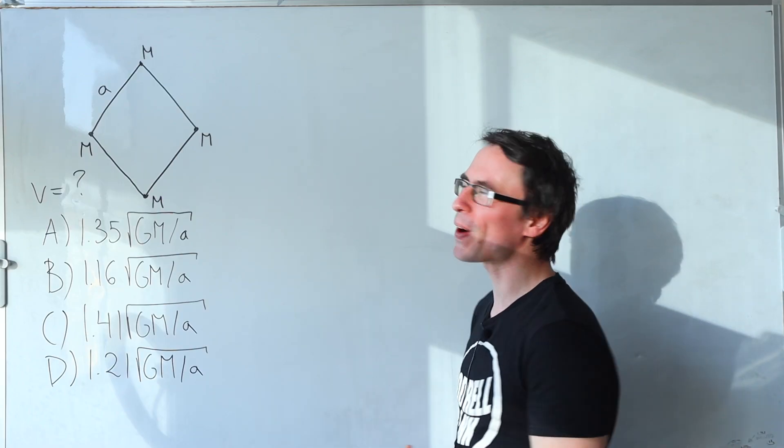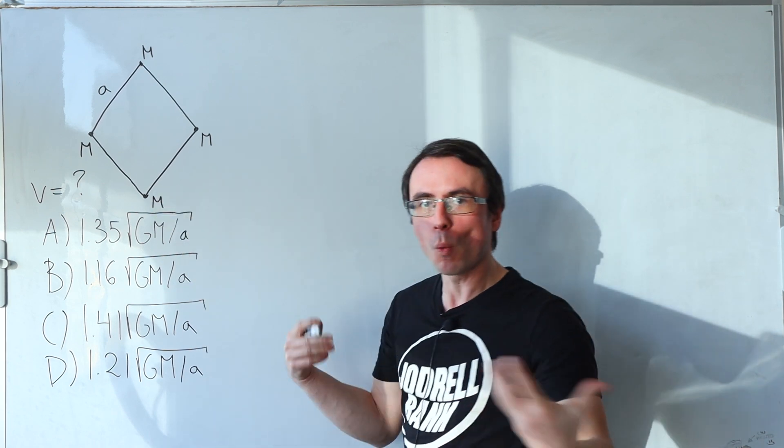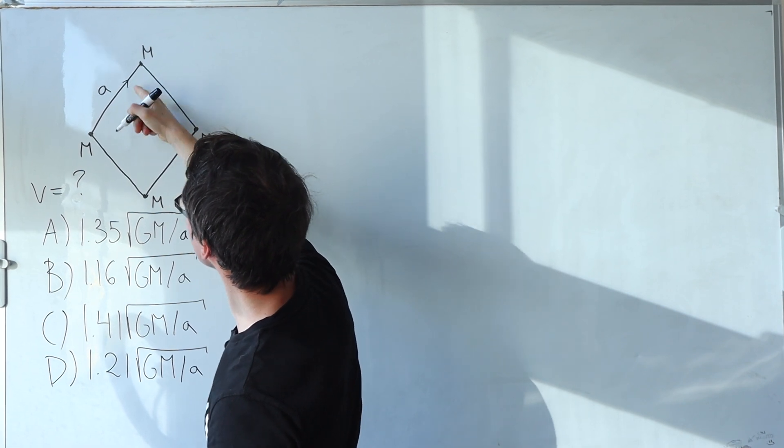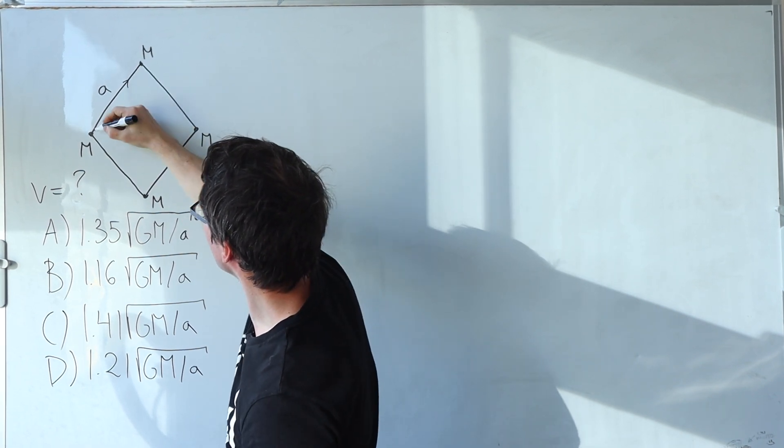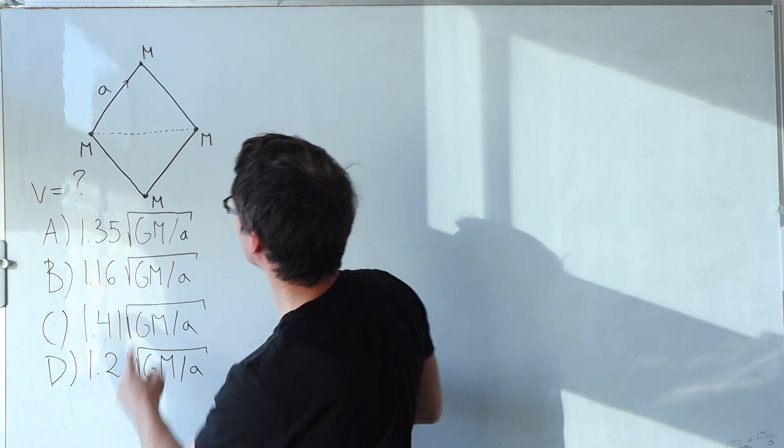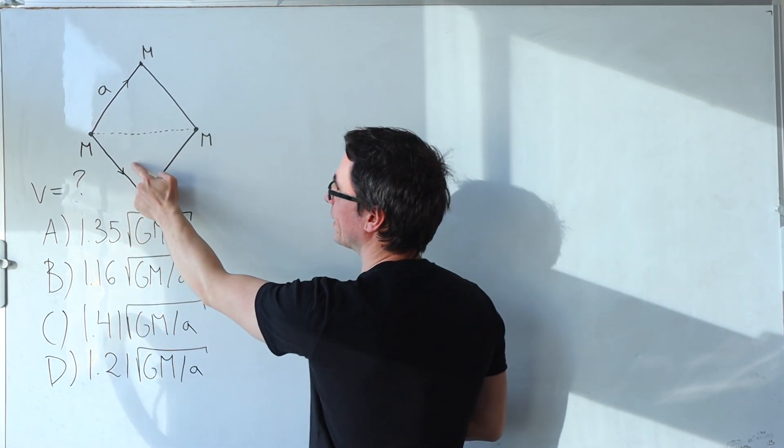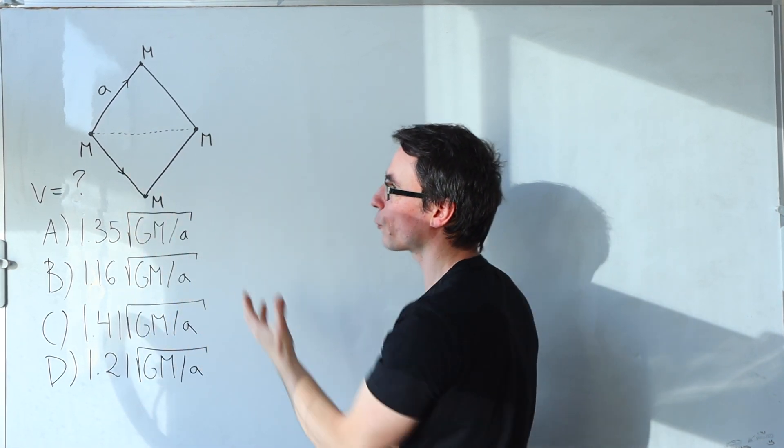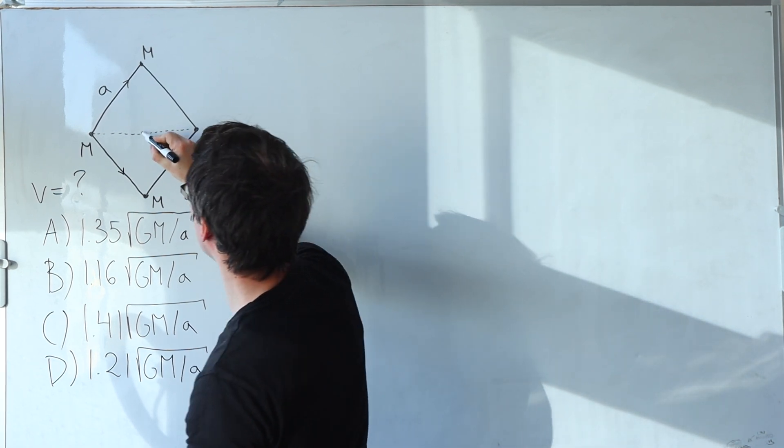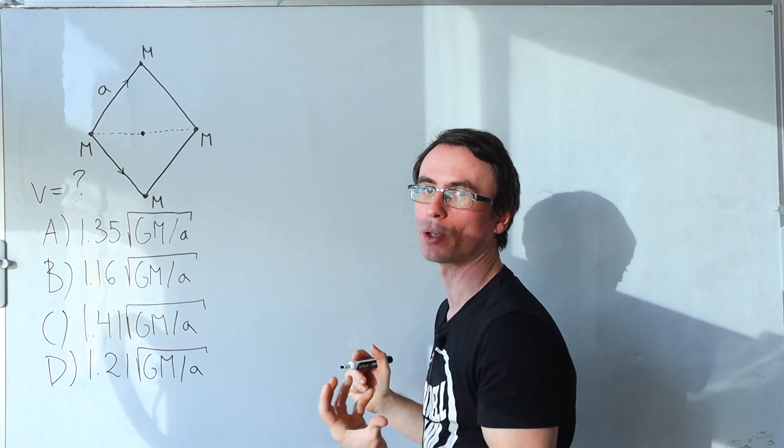As always with these problems we should start off with the fundamentals. So I'm going to pick this point here. What forces are acting on it? There'll be a gravitational force along this line and then there will also be a gravitational force along the diagonal of the square. There will also be a gravitational force acting along this line. So all of those forces have to combine to produce a net force towards the center of rotation that we tend to call the centripetal force.